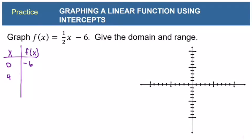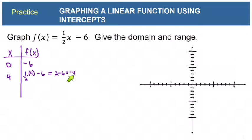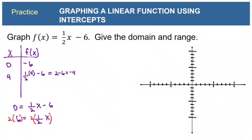Let's also plug in 4. I want a number that's easy to divide by 2. Four times one-half is 2, and 2 minus 6 is negative 4. So we also have the point (4, negative 4). Now let's calculate the x-intercept by plugging in 0 for y: 0 equals one-half x minus 6. Adding 6 to both sides and multiplying both sides by 2 gives x equals 12.